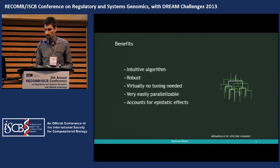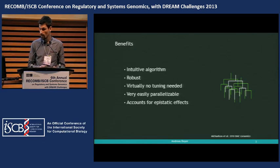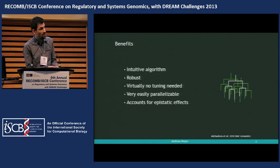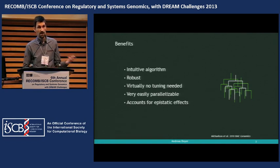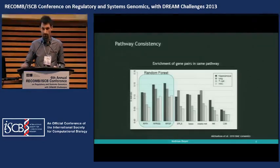This has a lot of benefits. It's a very intuitive method — you don't have to show any equations, which is important. It's very robust. But maybe the most important aspect is that you can account for epistatic effects. That's the main difference compared to the LASSO method you saw before, because LASSO can only account for additive effects. And as you will see, epistasis is really important.